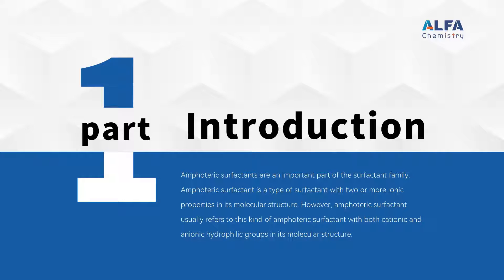Amphoteric surfactants are an important part of the surfactant family. An amphoteric surfactant is a type of surfactant with two or more ionic properties in its molecular structure. However, amphoteric surfactant usually refers to this kind of amphoteric surfactant with both cationic and anionic hydrophilic groups in its molecular structure.